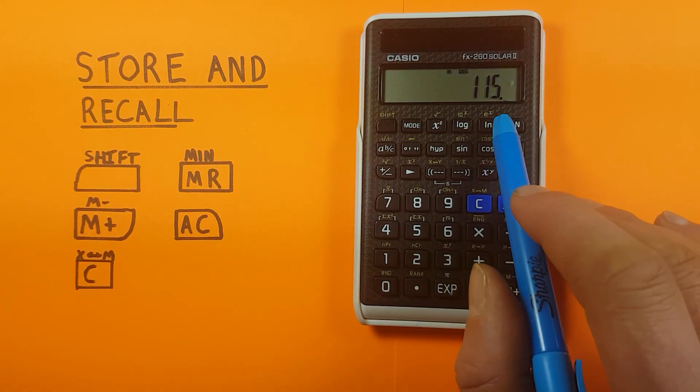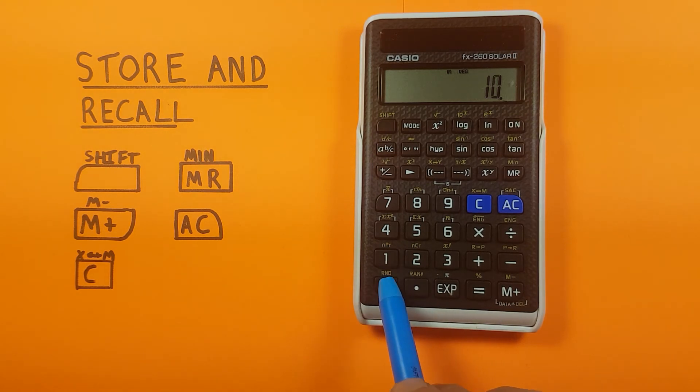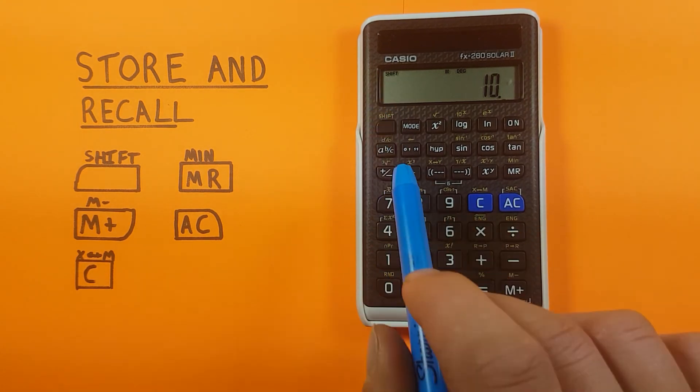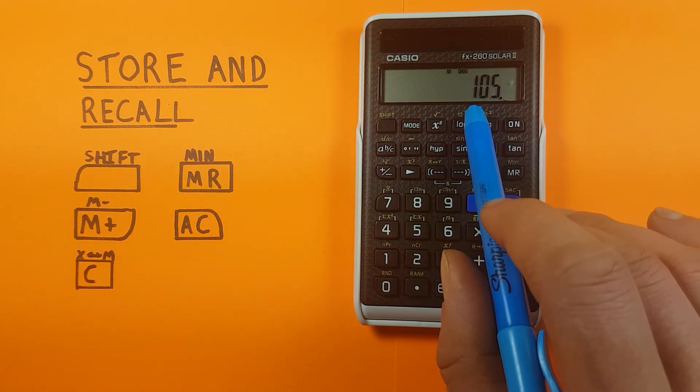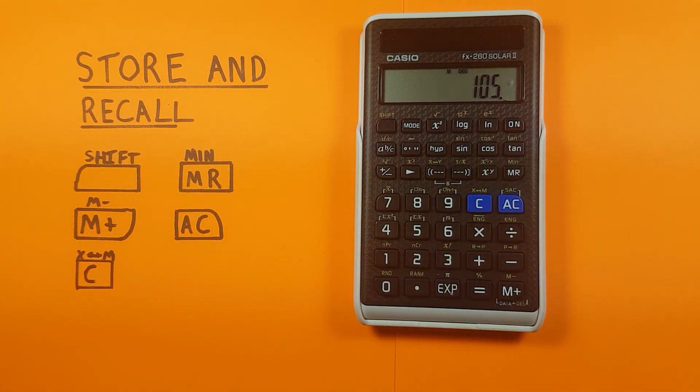If we want to subtract from this, let's say take away 10, we use the shift M+ and then the MR to make sure. Yep, now we're at 105. That makes sense.